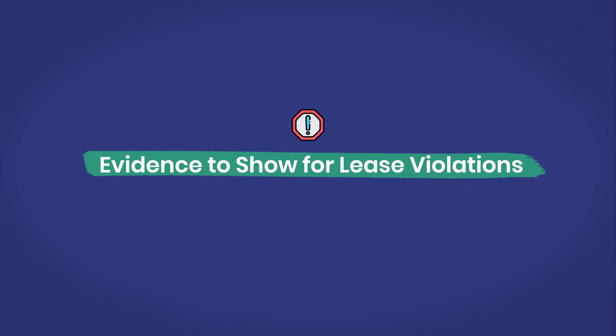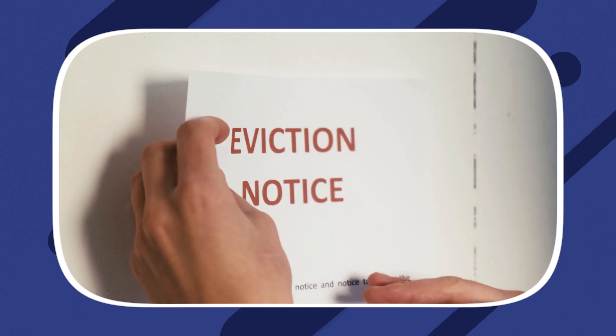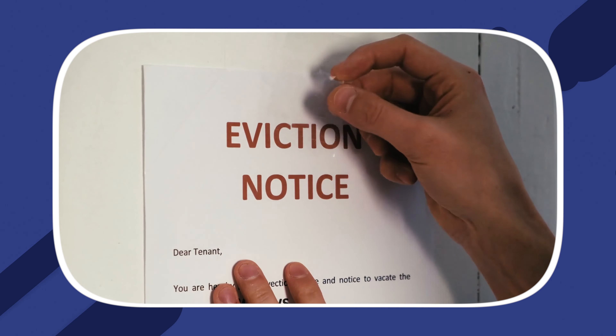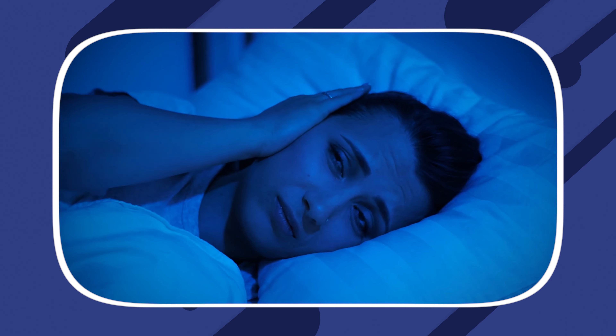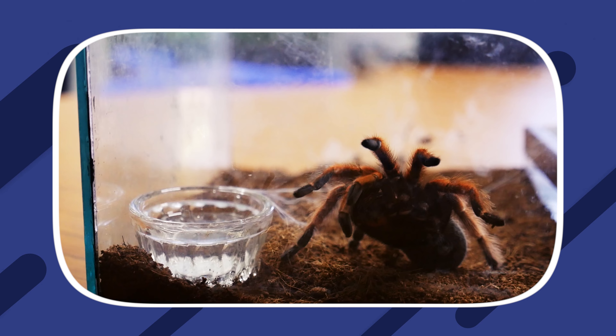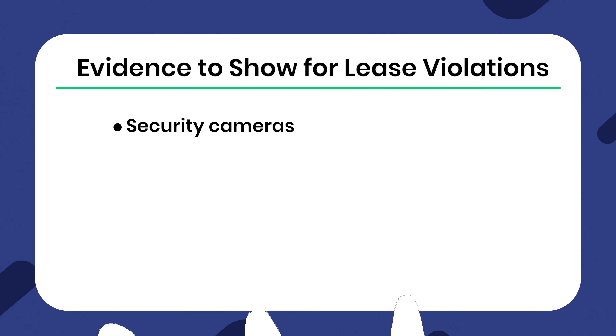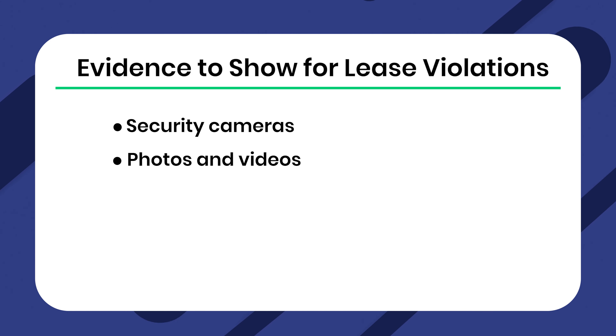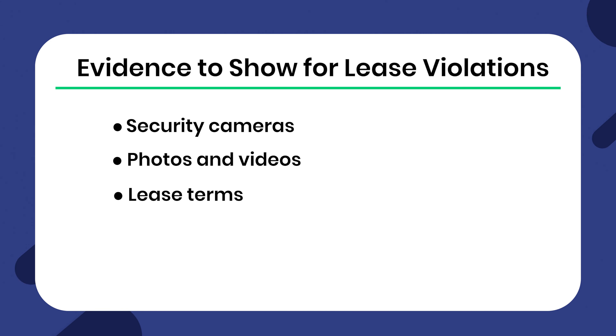If you are evicting the tenant for lease violations — for example, noise complaints, unauthorized pets, or property damage — it's important to show proof from security cameras, photos and videos, and the lease terms.